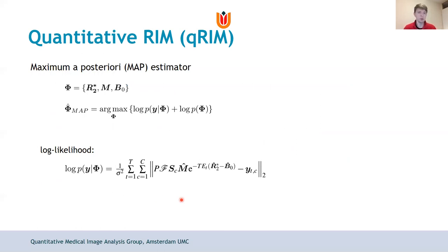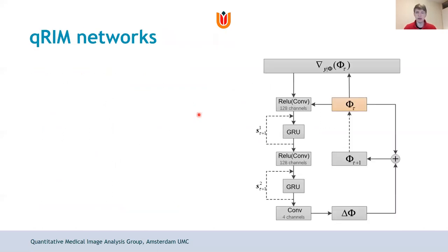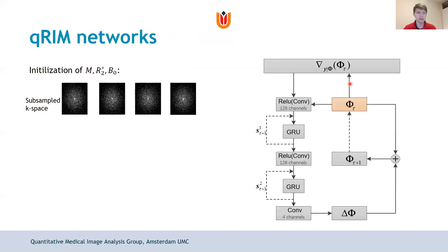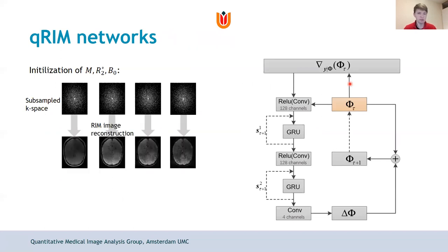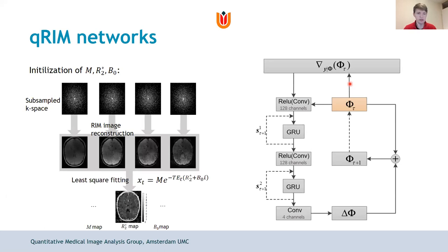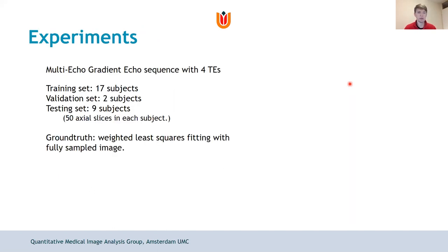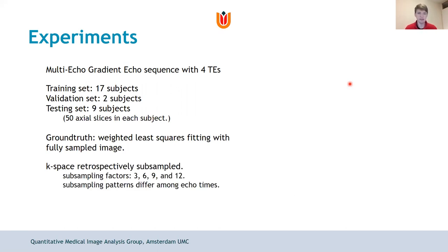Within the network we define the log likelihood using this unified model, while the prior is implicitly learned by the network. The log likelihood gradient is fed into the network as before. We initialize the network using the conventional RIM and least squares fitting, then perform training. In this experiment we had 17 subjects for training with some validation and testing over a number of acceleration factors.